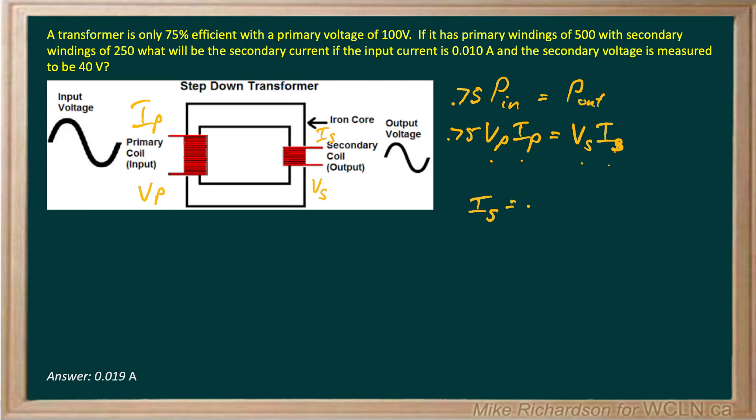I secondary will be 0.75, 75% of V_P times I_P all divided by V_S.